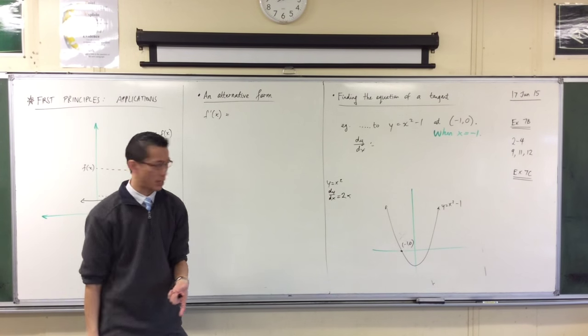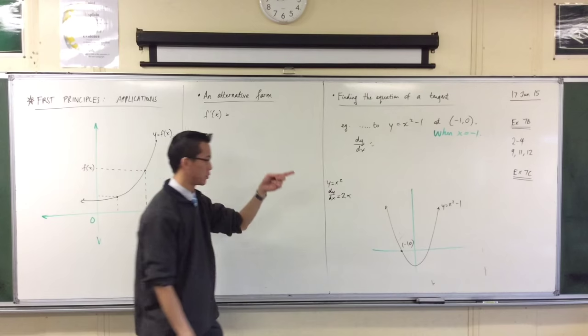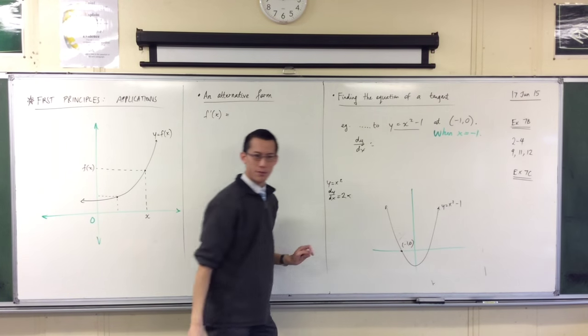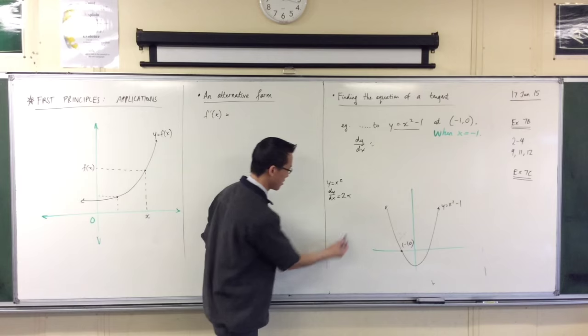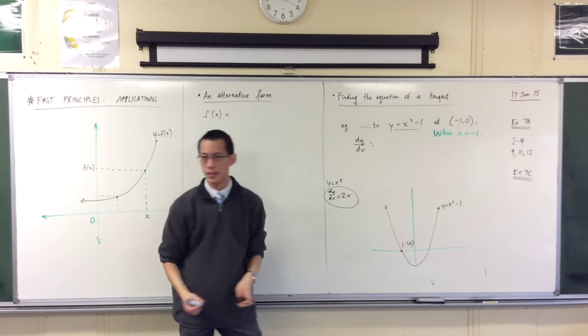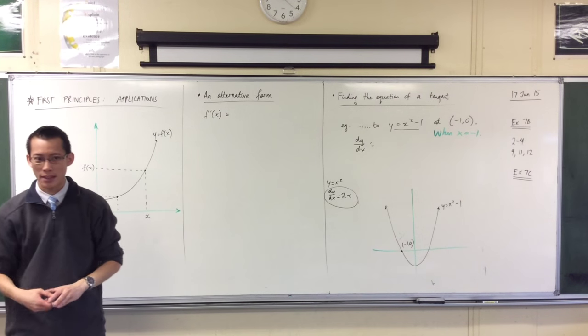And we noticed through first principles that dy/dx is 2x. Now, what's interesting is once you march through first principles with this, if you use this as your starting point, you find, surprise, surprise, the same derivative. Now, why would that be the case?